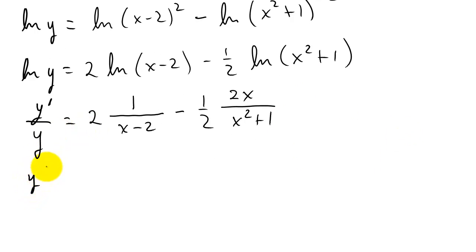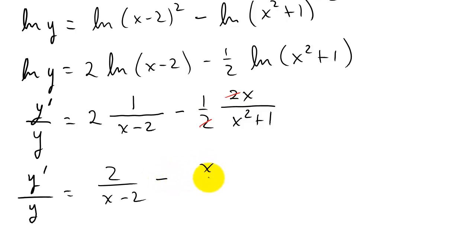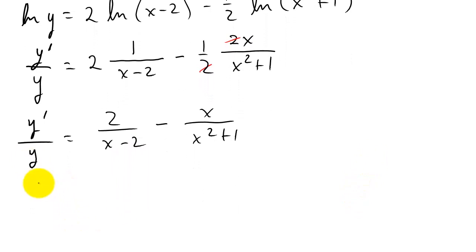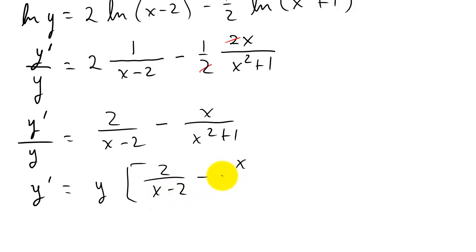So now we have y prime over y equals 2 over x minus 2. And you can see the 2's cancel, so we're left with minus x over x squared plus 1. Now we have to solve this for y prime, so I'm going to multiply everything by y — the y's cancel — and that's going to leave us with y prime equals y times 2 over x minus 2 minus x over x squared plus 1.